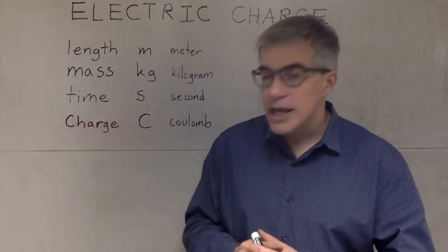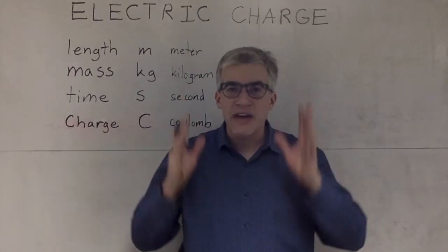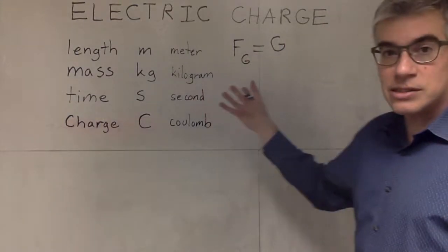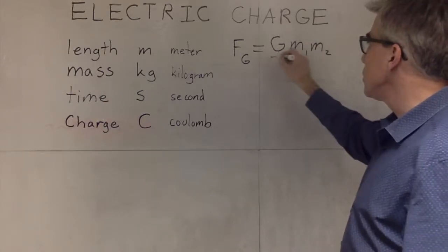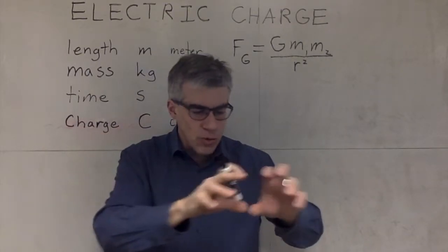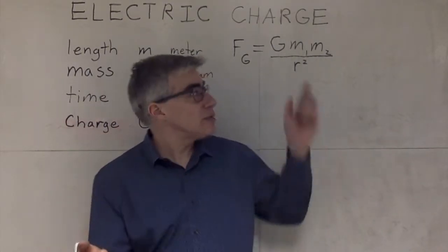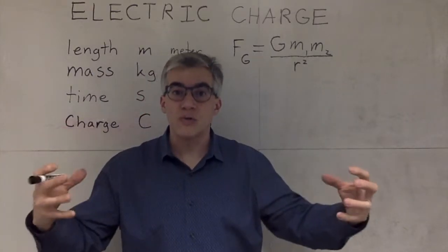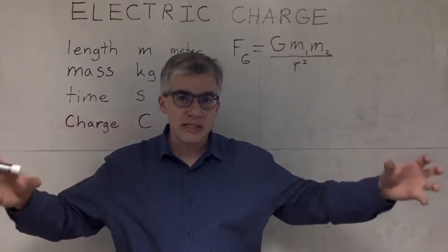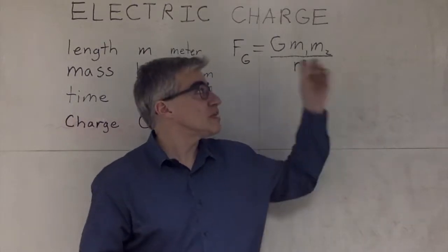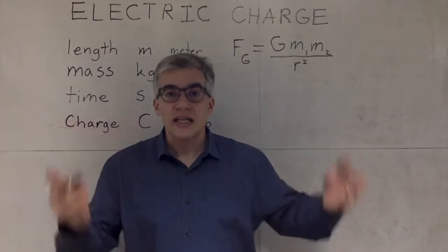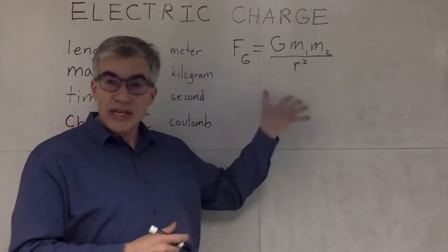How do we measure this? Electricity is, in some ways, very similar to gravity. Universal gravitational force is G·m₁·m₂/r². If you have two 1-kilogram masses one meter apart, they attract with a force equal to the value of G in newtons. If you double one of the masses, you double the force. If you double the distance between them, the force drops to one-fourth because it's 1/r². If you go 10 times farther away, it's one-hundredth the force.